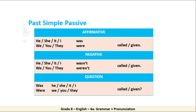Now let's have a look at the past simple passive. Let's read the table and the examples together. Affirmative: he/she/it/I was called or given; we/you/they were called or given. Negative: he/she/it/I wasn't called or given; we/you/they weren't called or given.